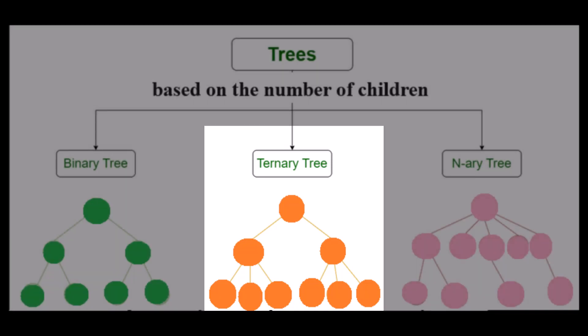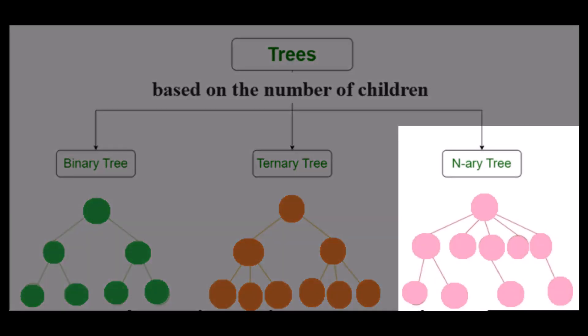And then we have n-ary tree or generic tree, which is a collection of nodes where each node is a data structure that consists of records and a list of references to its children.